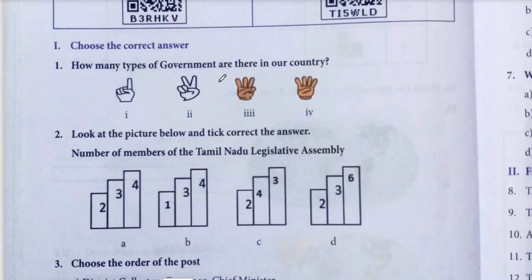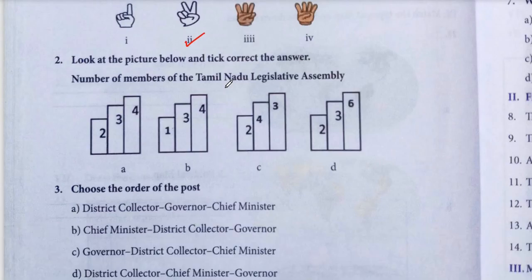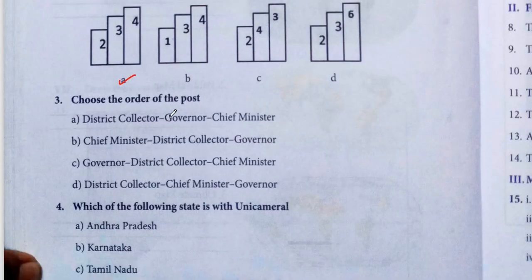First question: how many types of government are there in our country? There are totally two types — State and Central. So option 2. Next, look at the picture below and take the correct answer. The number of members of Tamil Nadu Legislature Assembly is 234. So option A.